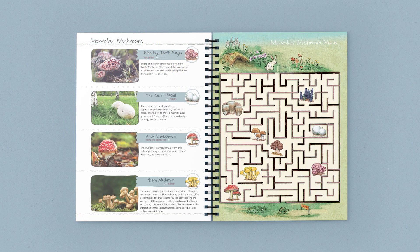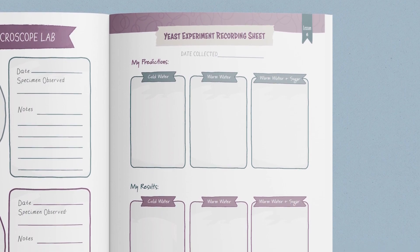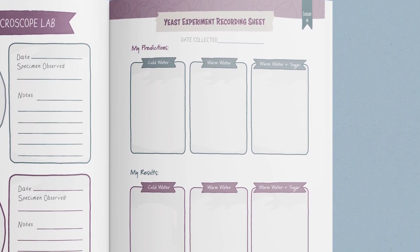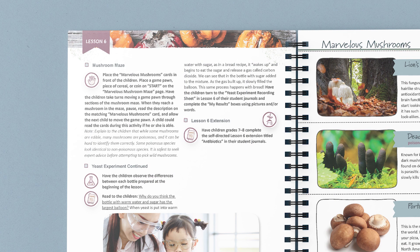Next, you'll play the marvelous mushroom game using these mushroom cards and the maze board. Now it's time to finish up the yeast experiment you started at the beginning of the lesson, and the children record their observations in their student journals. Finally, the lesson closes with a reminder to the parent to have children in grades 7 and 8 complete the lesson extensions in their student journals.